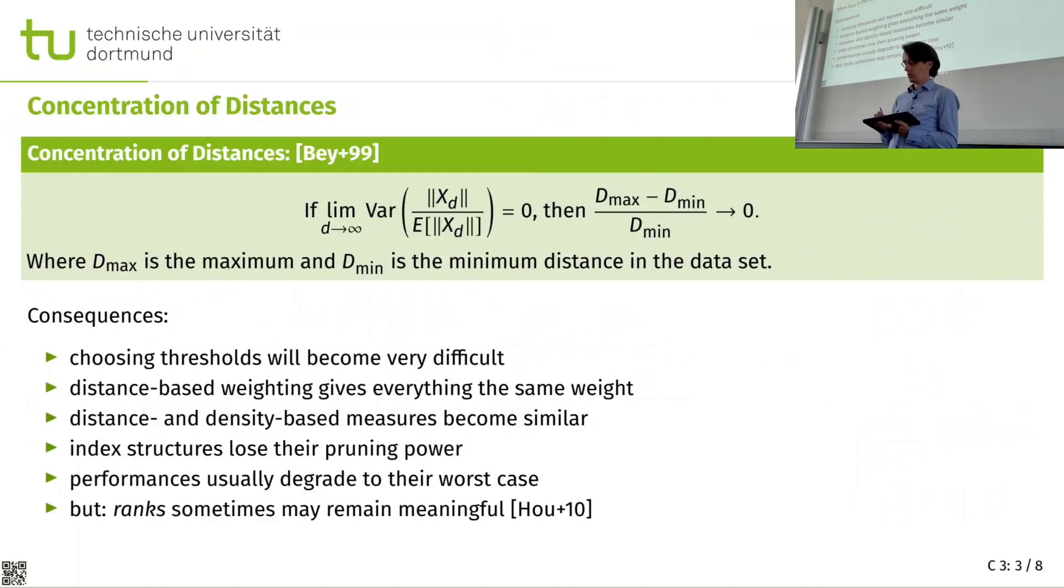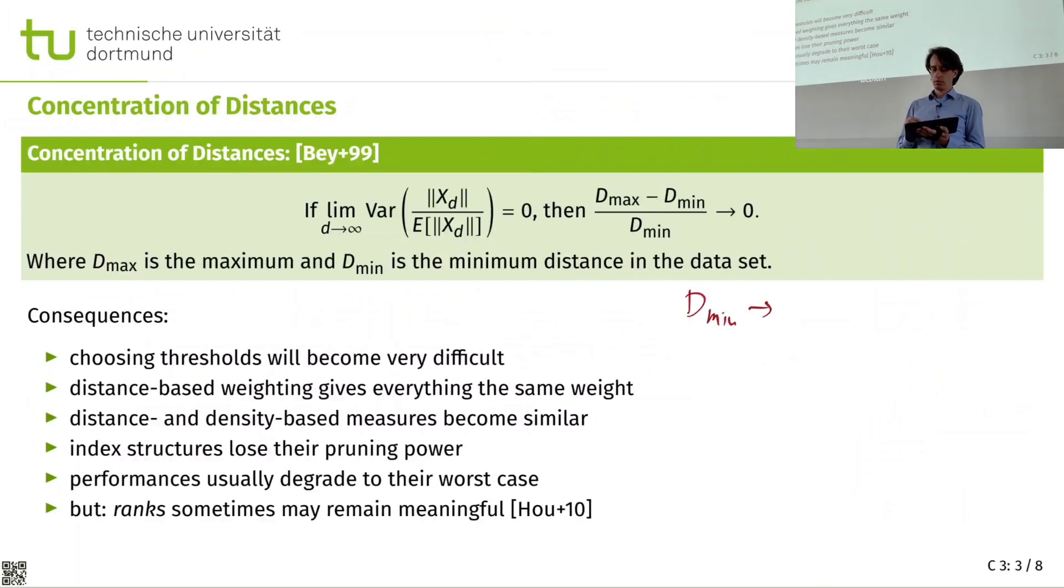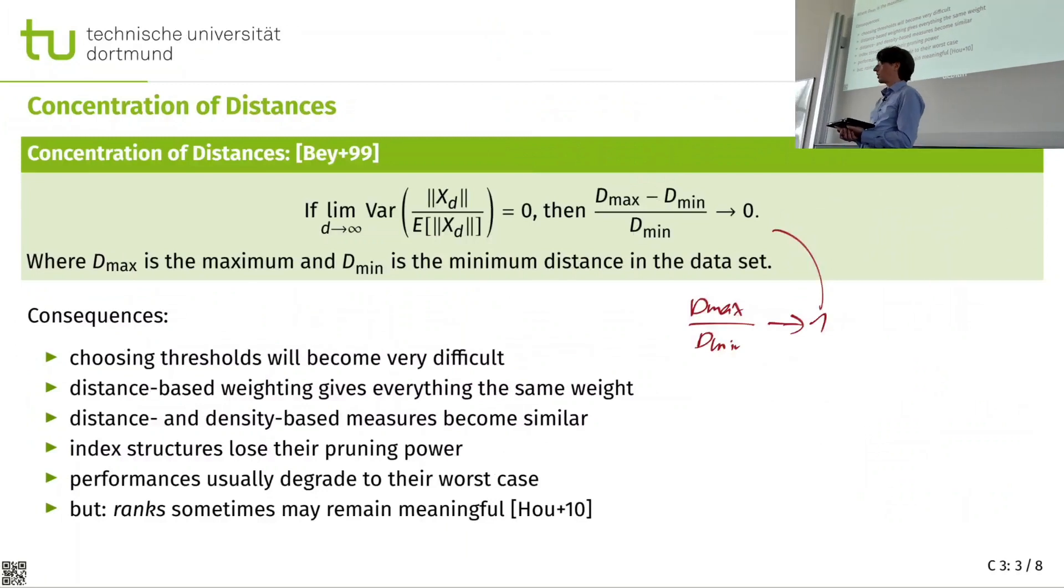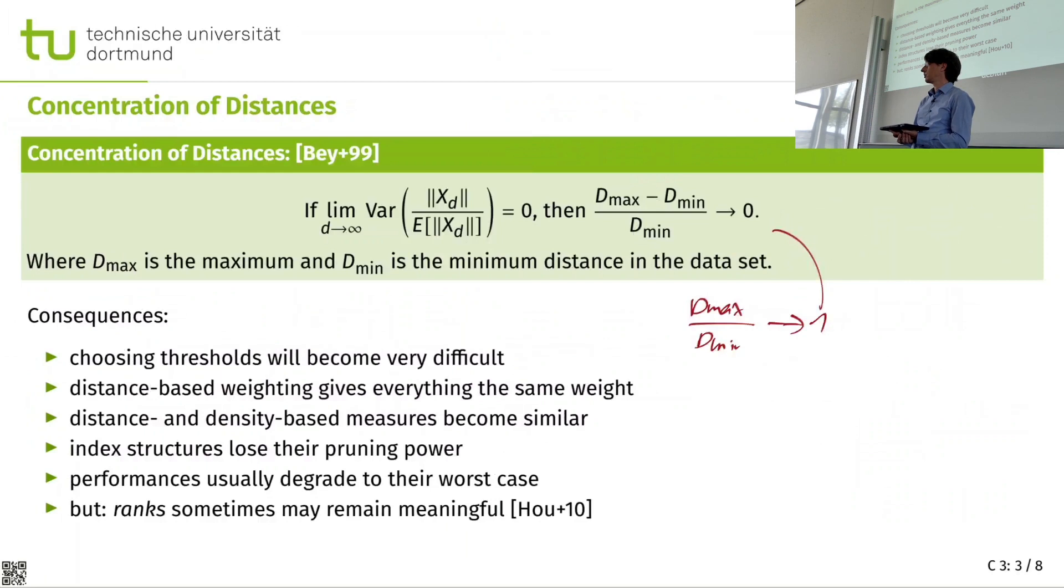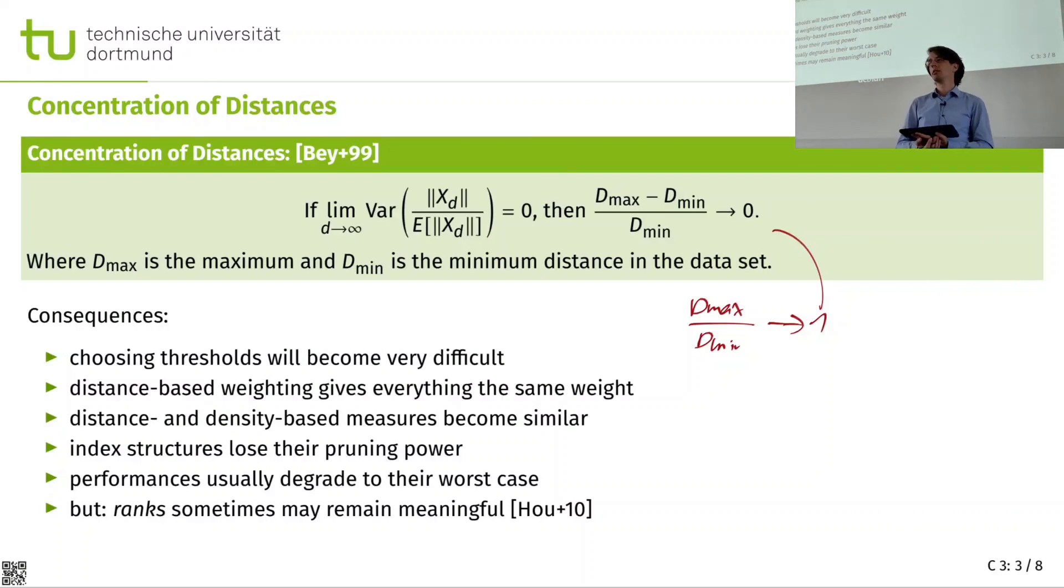And they then observed that the difference between the maximum and the minimum compared to the minimum goes to zero. So that is kind of how it was written. You can imagine that this kind of means the minimum goes towards the maximum, except that the scale changes. So we can also write d_max divided by d_min goes to one. So the ratio of my largest distance to my smallest distance becomes one. So the largest and the smallest kind of no longer differ.